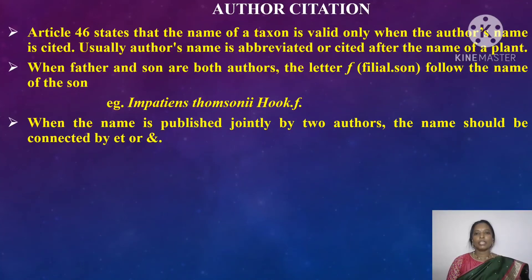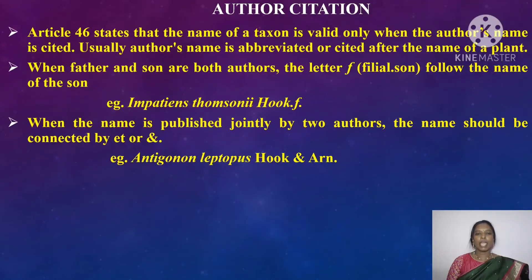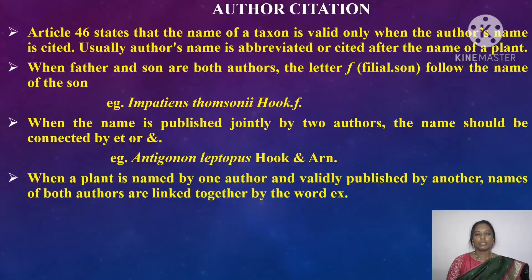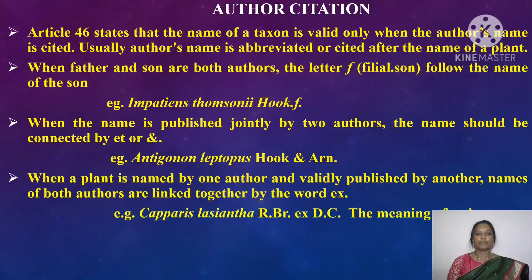When the name is published jointly by two authors, the names are connected by 'et' or '&'. For example, Antigonon leptopus is cited as 'Hook. & Arn.' When a plant is named by one author and validly published by another, the names of both authors are linked by the word 'ex'. For example, Capparis lassiantha is cited as 'R.Br. ex DC.', meaning the name was validly published by de Candolle.